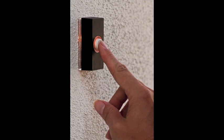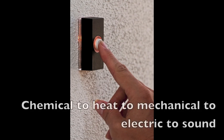Doorbells run off of electricity as well. So, once again, where did that electricity come from? Assuming it came from a power plant, chemical energy was converted to heat, to mechanical, to electric, then to sound.